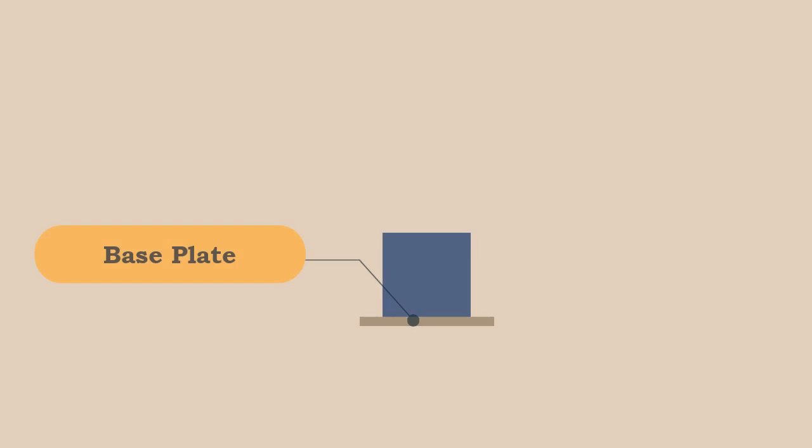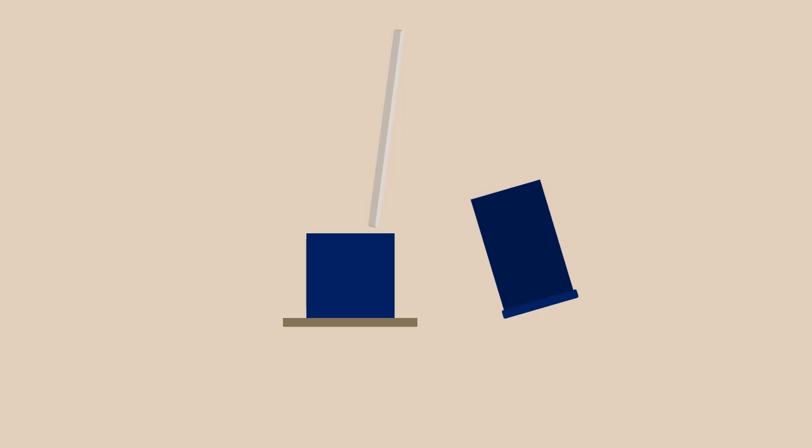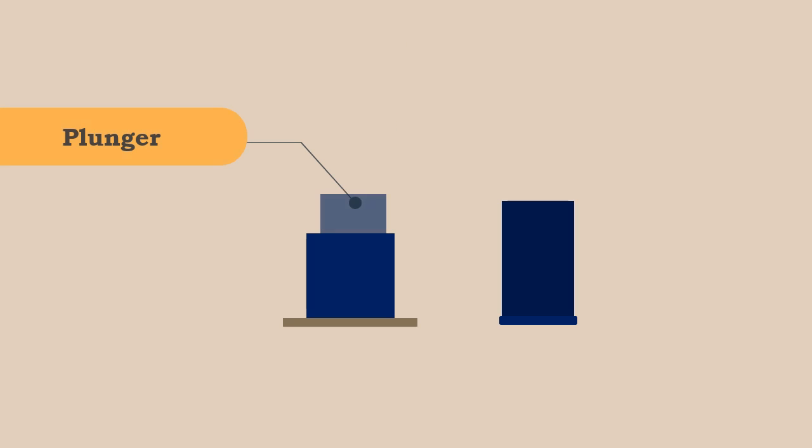Now, the cylinder of the test apparatus is placed on the base plate and the aggregates are filled in layers with 25 blows on each layer. The surface is leveled and the plunger is placed on the surface.